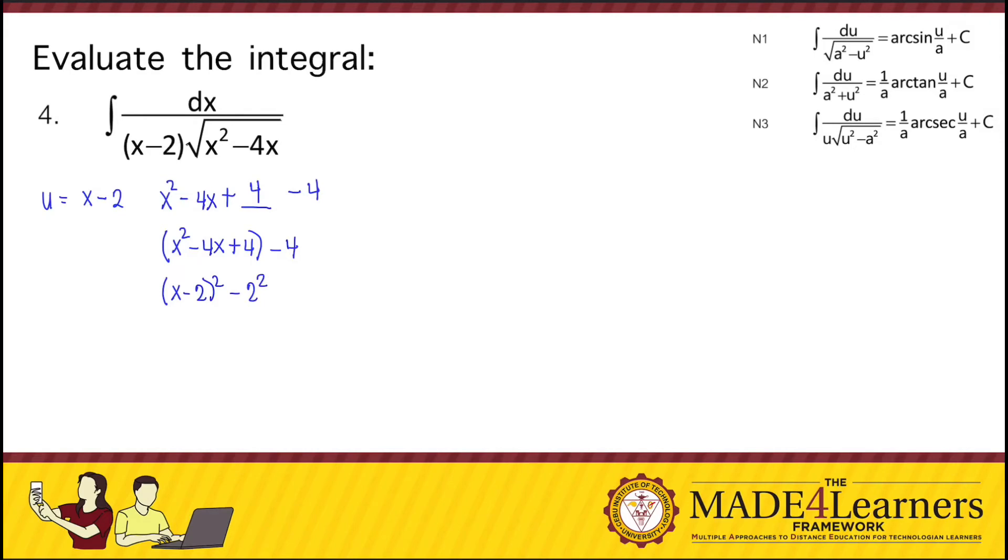So therefore, this is x minus 2 squared is u squared, and 2 squared is equal to a squared. So that gives u equals x minus 2, and therefore a is equal to 2. So we rewrite now our given. If u is equal to x minus 2, then du is just equal to dx.